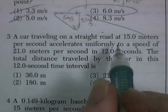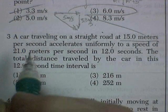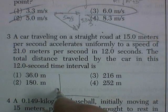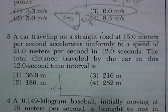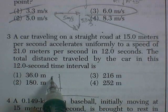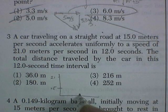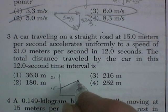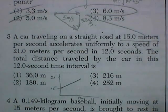All right. A car traveling on a straight road at 15 meters per second. So I'm going to graph this. It starts at 15 meters per second. It speeds up to 21 meters per second in a time of 12 seconds. So it starts here. It gets up there in 12 seconds.